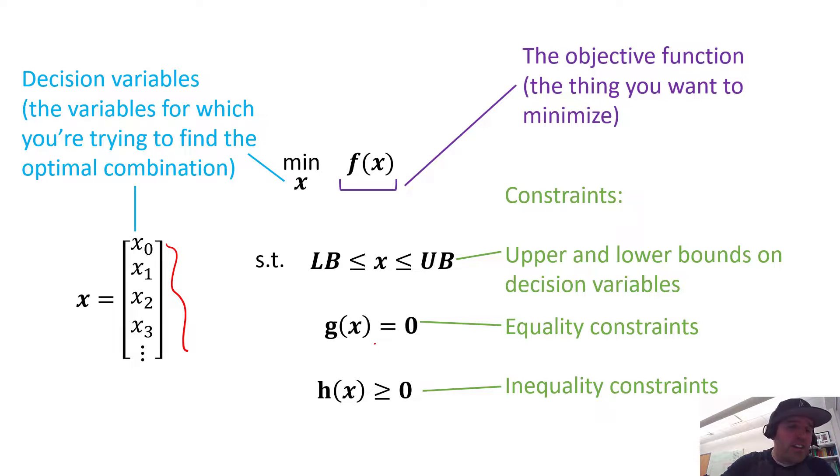This vector contains the decision variables. You're trying to find the optimal combination of these decision variables such that your objective function is minimized, subject to certain constraints.